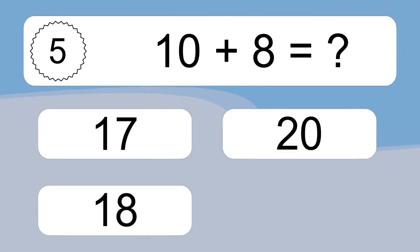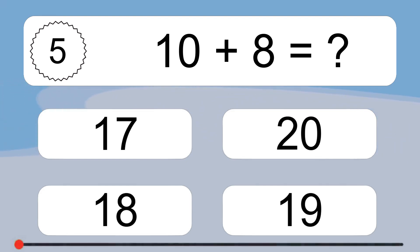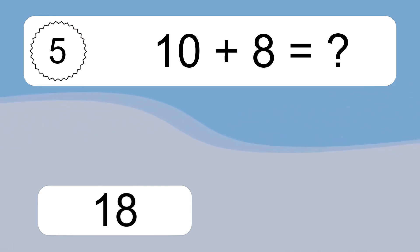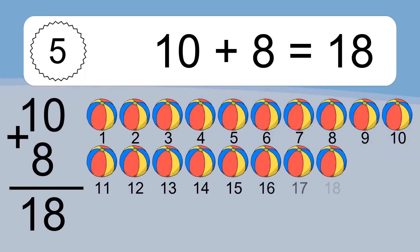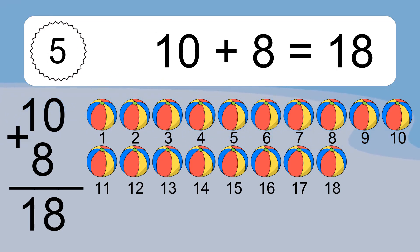10 plus 8 equals what? 10 plus 8 equals 18. Let's count it: 1, 2, 3, 4, 5, 6, 7, 8, 9, 10, 11, 12, 13, 14, 15, 16, 17, 18.